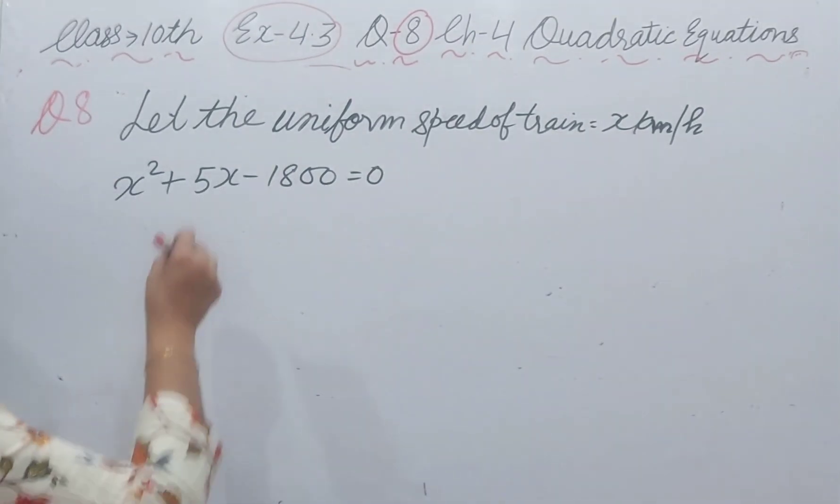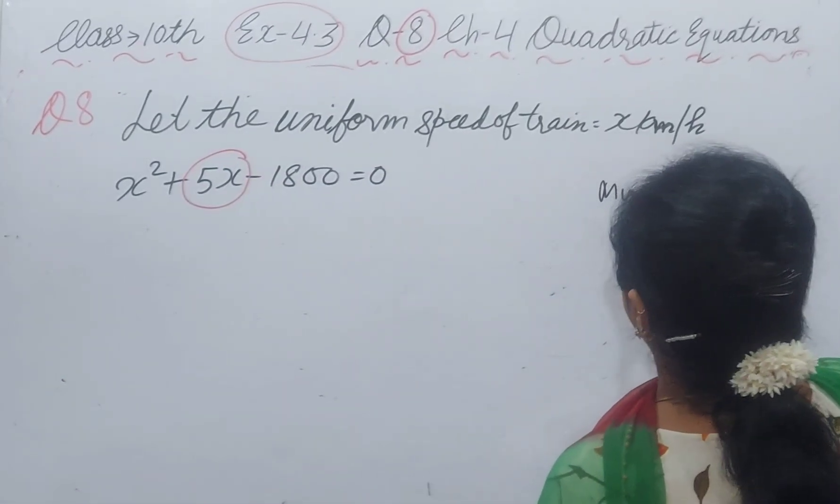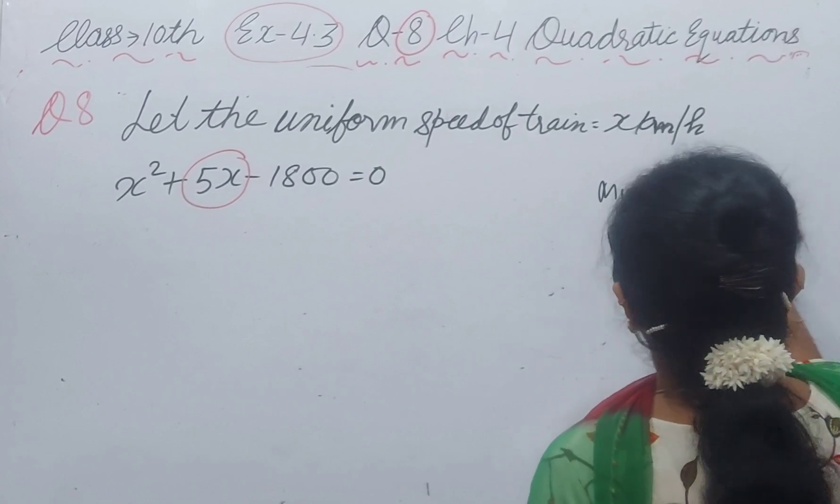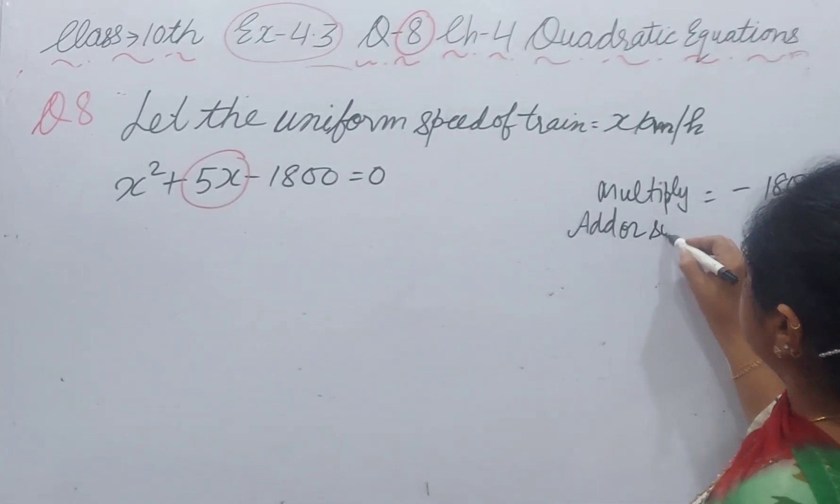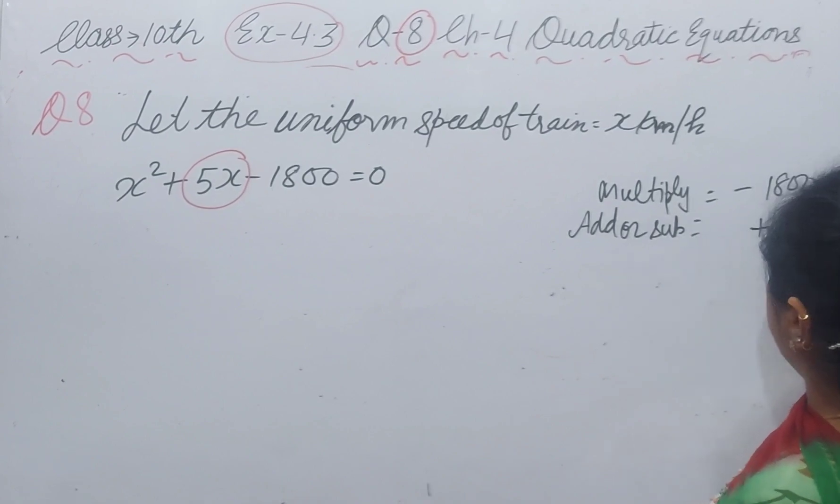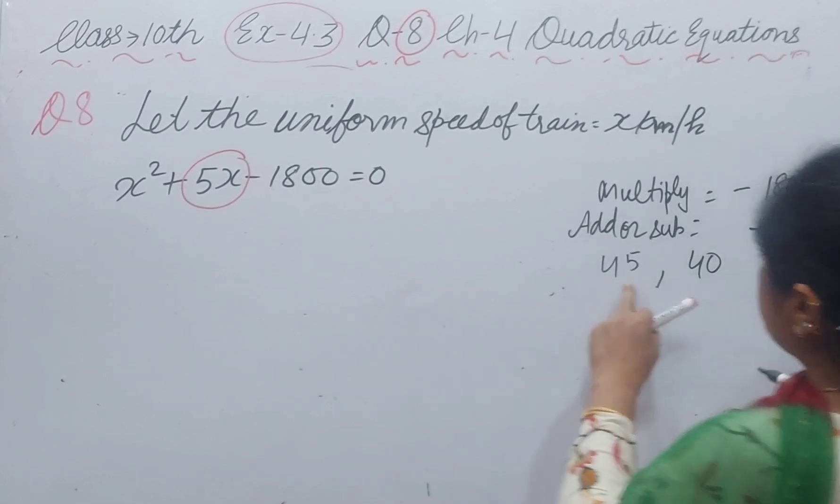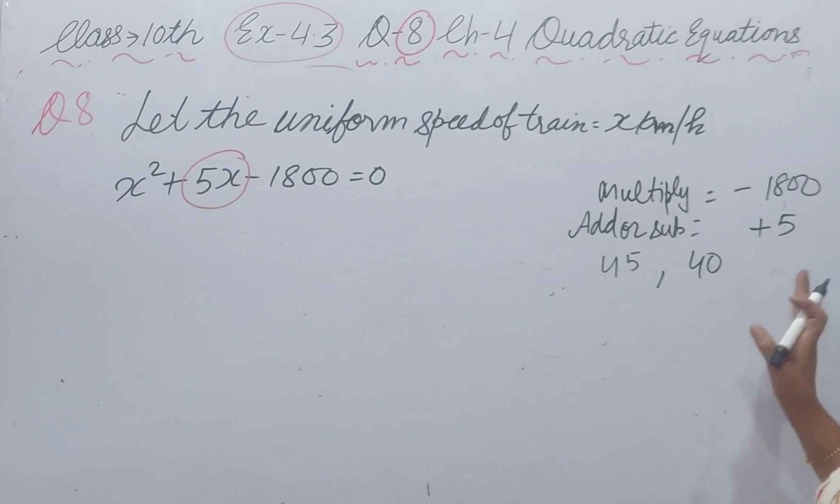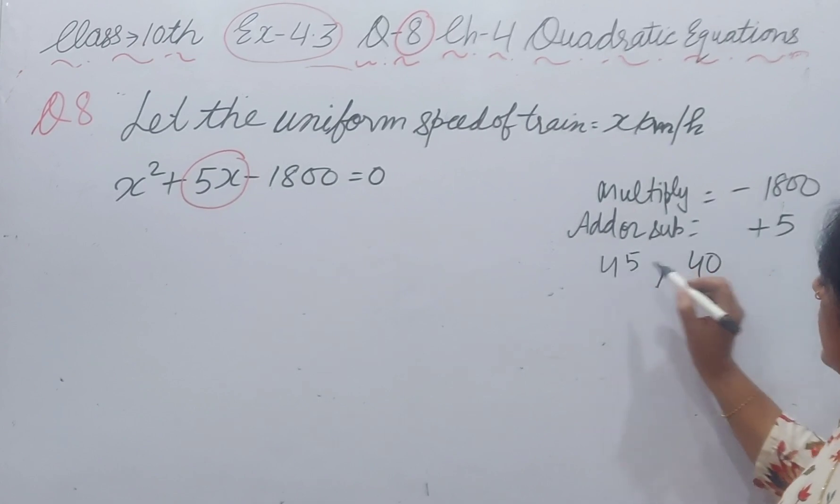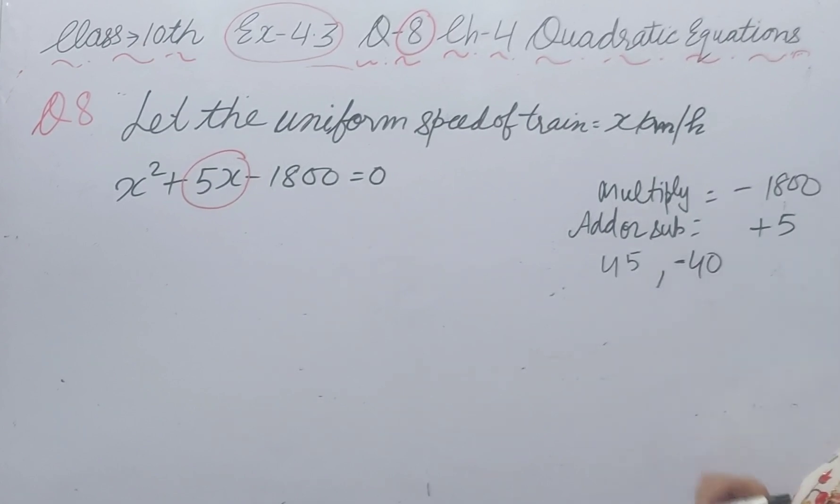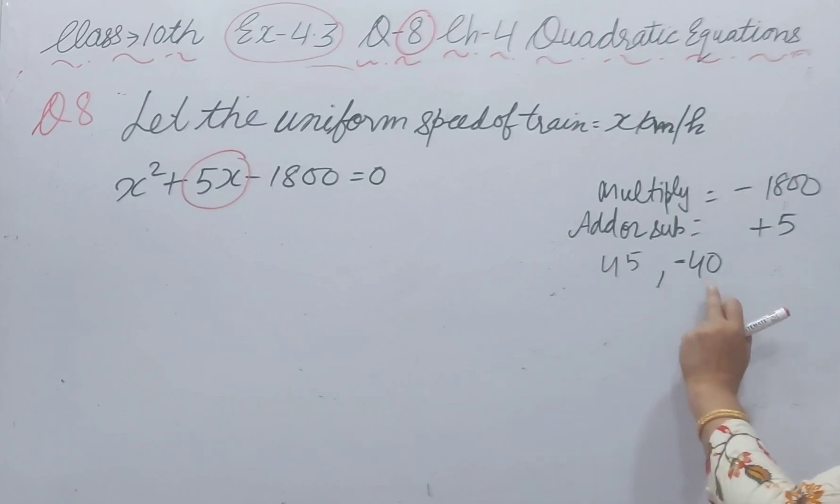In split the middle term, we have to use two factors like that. If we multiply, we get minus 1800. If we add or subtract, we will get plus 5. We make two pairs, 45 and 40. 45 and 40, multiplication is 1800. But we want minus 1800. We take 45 as positive and 40 as negative. When you add and subtract, plus 5 will come. And when you multiply 45 with minus 40, minus 1800 will come.